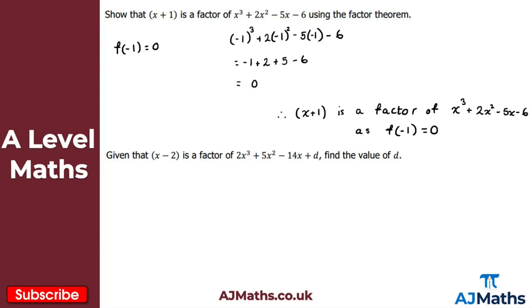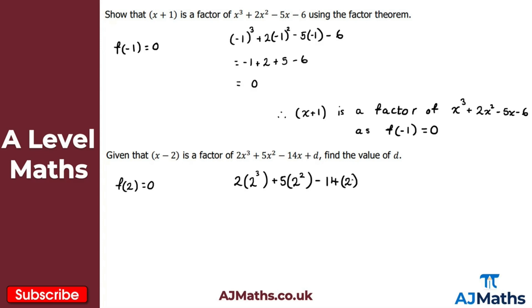Now for this next one, we're given that x minus 2 is a factor, again of this cubic polynomial. We just want to find the value of d, where d is the constant term of the cubic polynomial. So if x minus 2 is a factor, by the factor theorem f of 2 must be equal to 0. So if I substitute 2 into this cubic polynomial and set it equal to 0, we can solve. So we get 2 lots of 2 cubed plus 5 lots of 2 squared minus 14 lots of 2 plus d, and this is all equal to 0.